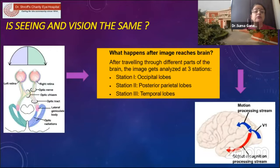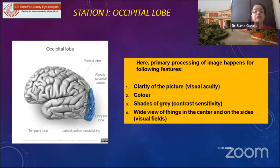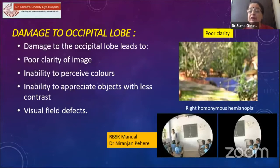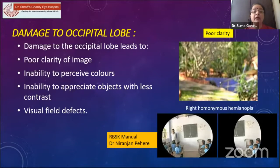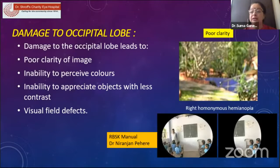This is because vision is not only what we see as 6/6. There are multiple stations in the brain — the occipital lobes, posterior parietal lobes, and temporal lobes. We see a clear picture in the occipital lobe; colors are appreciated, shades of gray and contrast are appreciated, and it also helps us to have a wide view of things, which is visual field. If any of these factors are affected — if there is damage to the occipital lobe by some problem during the antenatal, perinatal, or postnatal period — they have problems: inability to perceive colors, inability to appreciate objects with less contrast, and visual field defects.